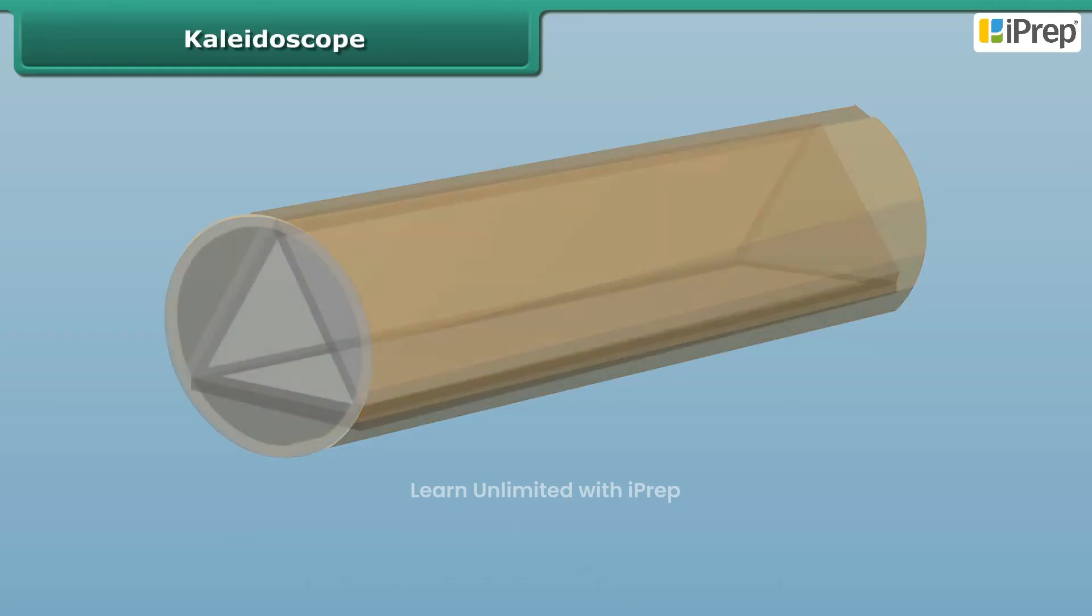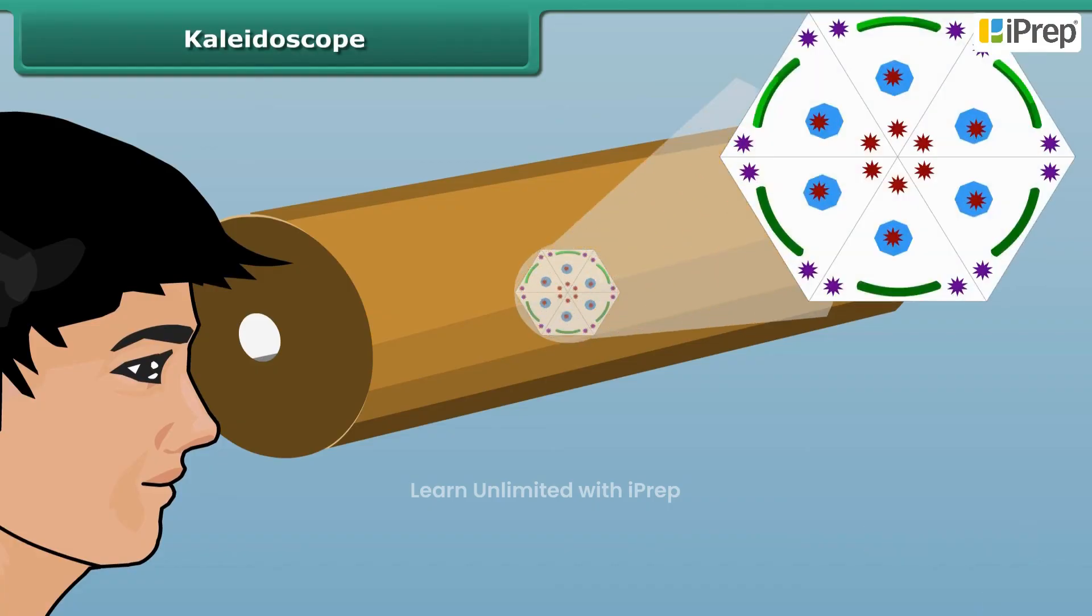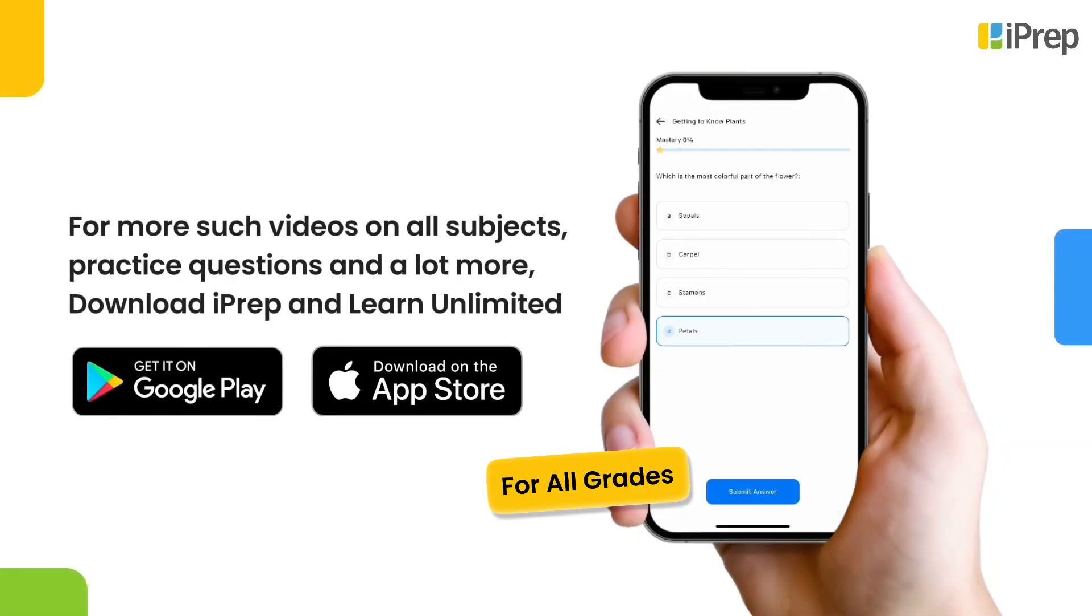Rotate the kaleidoscope to view through the hole in the cardboard. A variety of beautiful, colorful patterns can be seen in the tube.